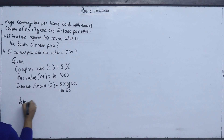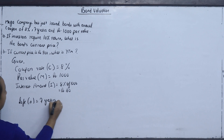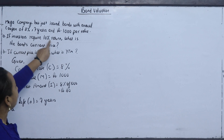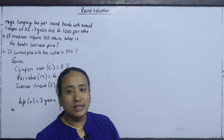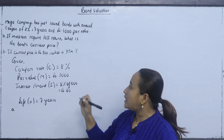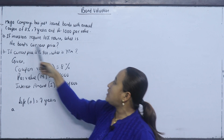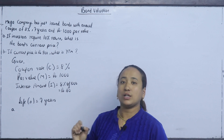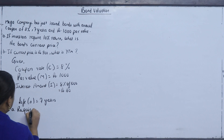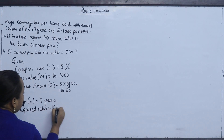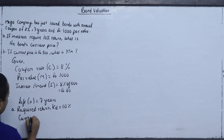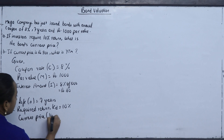The bond matures in 7 years. If the investor requires a 10% return, the required return (kd) equals 10%. We need to find the bond's current price, which is V0. Since there is a coupon rate and a fixed life, this is a redeemable bond.